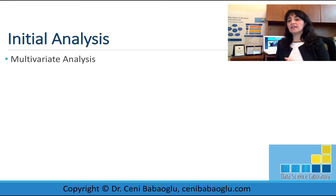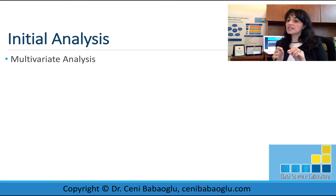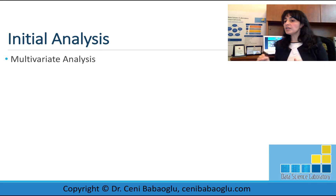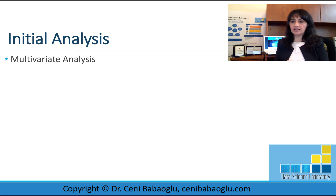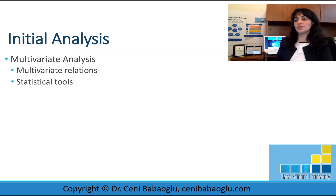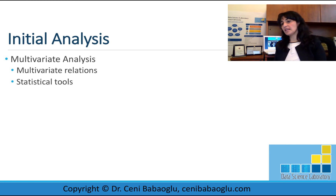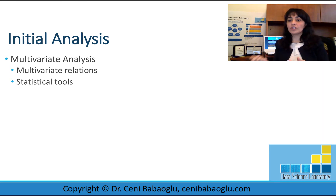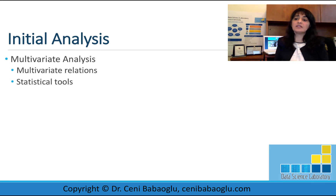The last step of initial analysis is multivariate analysis. We check the multivariate relations. This stage can give some stories about the dataset — stories of the actual data, with no inferences, no conclusions, or predictions yet. Remember, we're still doing initial analysis. This is also the stage where some advanced statistical tools are used. For example, one-way analysis of variance or the rank equivalent Kruskal-Wallis test can be used to compare the means of some groups in the dataset.